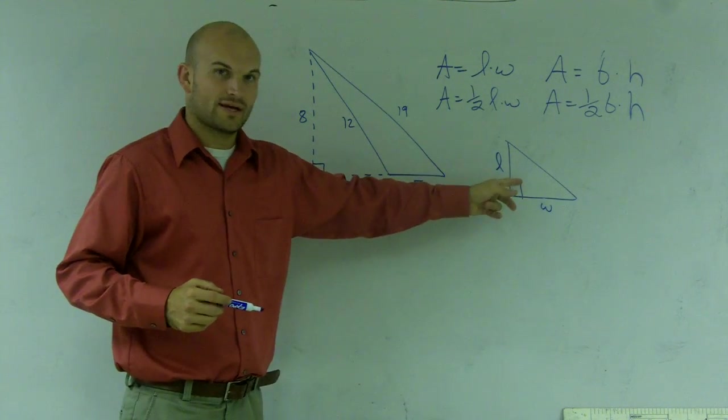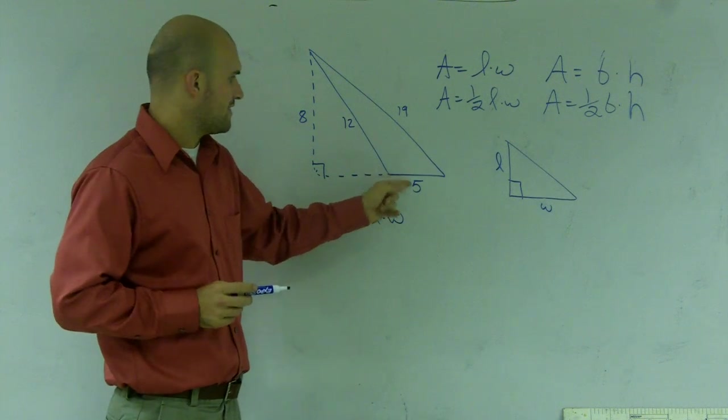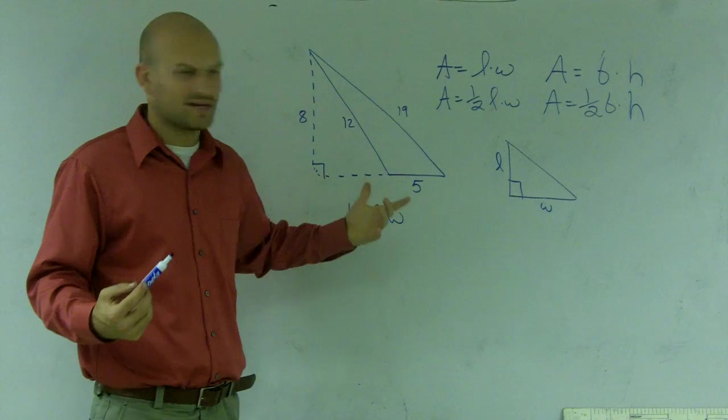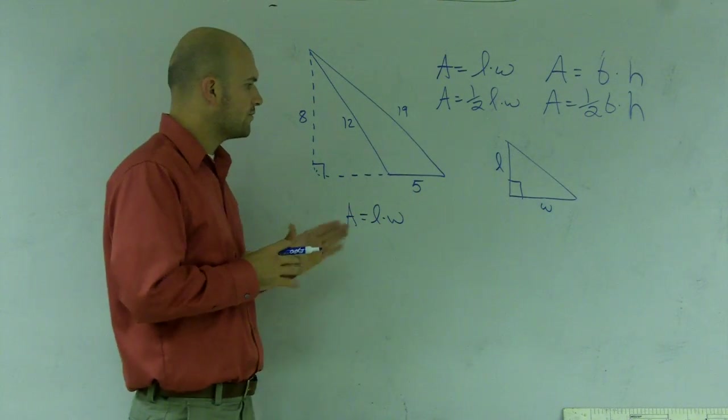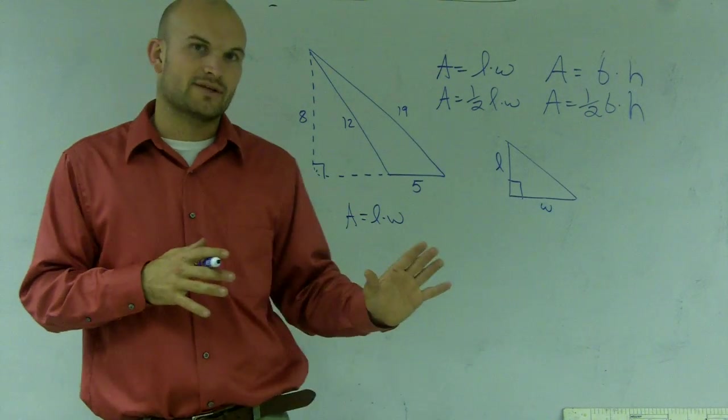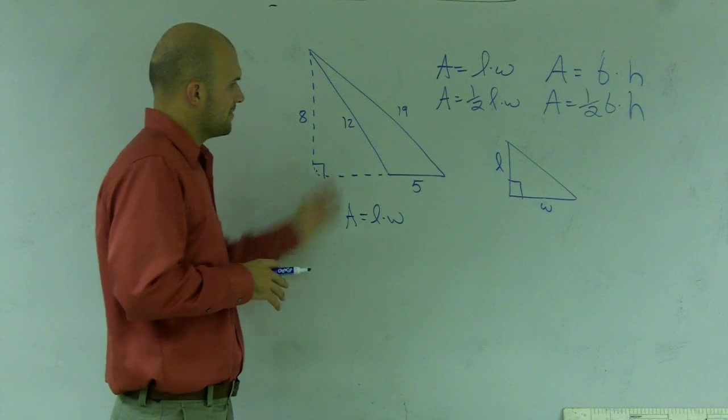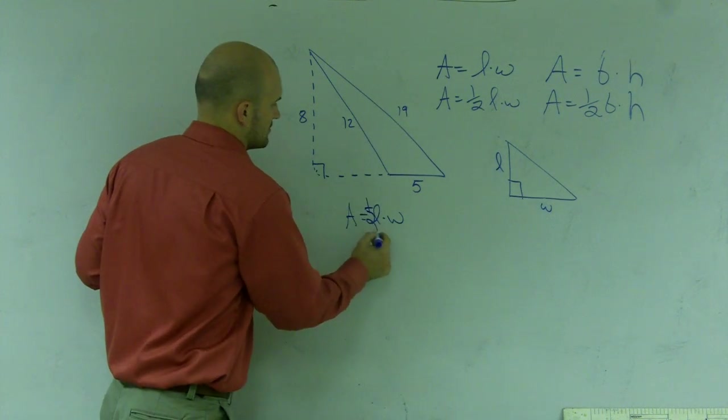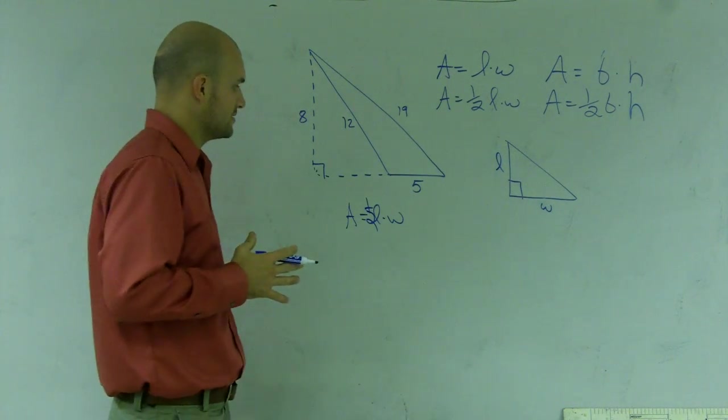well, if you're thinking length and width like it's a right triangle, you're going to think 5 times 12 or 5 times 19, right? It can get pretty confusing. So we don't like to use length times width for this because 5 times 12 or 5 times 19 times one-half is not going to give you the area of a triangle.